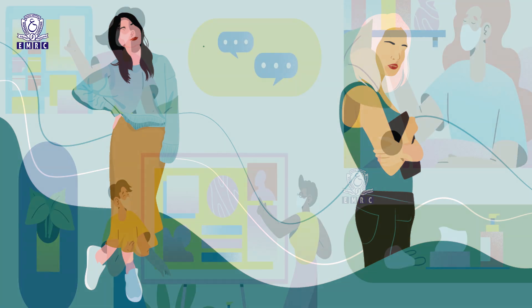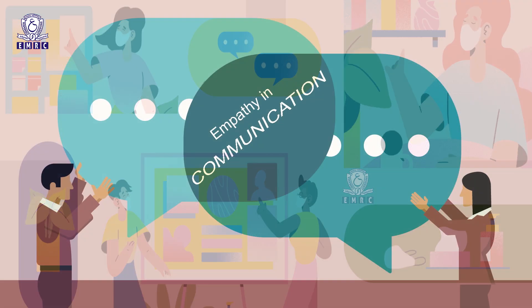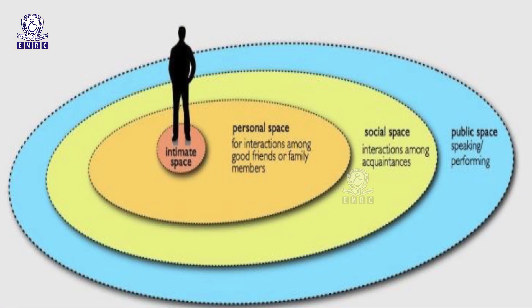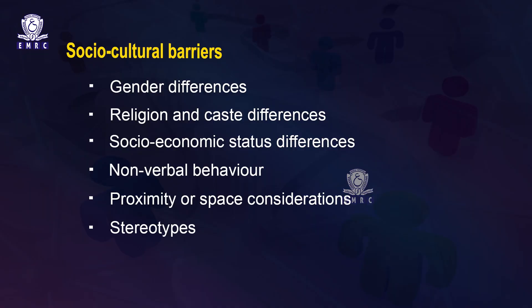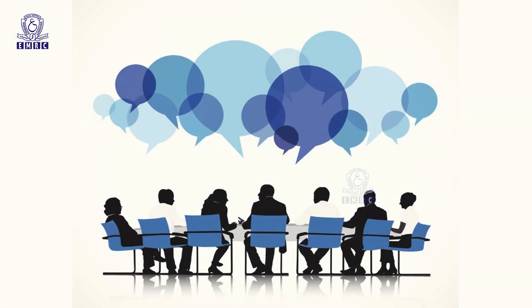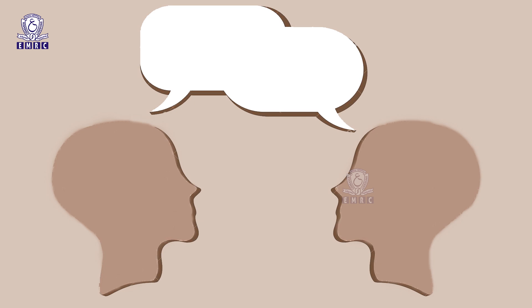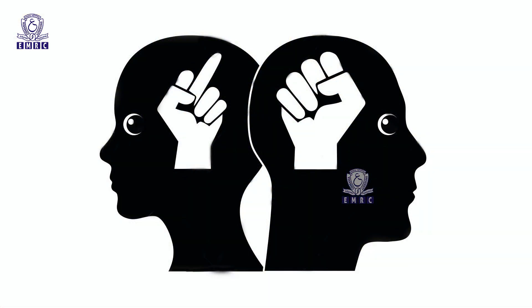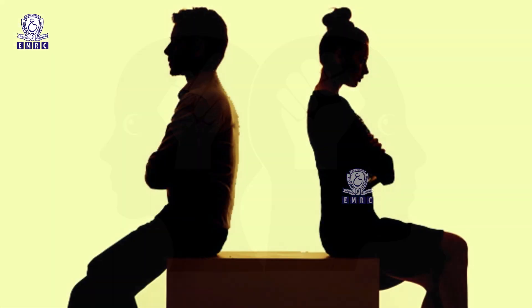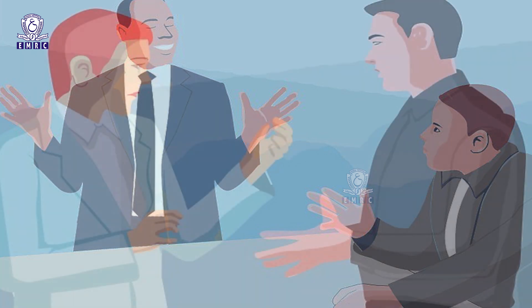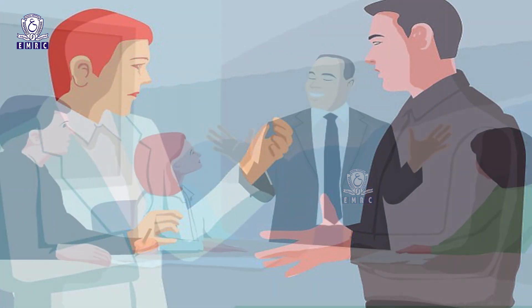Proximity or space considerations differ with every culture when engaging in face-to-face communication, and proximity may become a barrier if not paid attention to. Stereotypes are rigid, over-generalised mental ideas about an entire group of individuals or about their behaviours as a whole. For example, 'all men are aggressive' is a stereotype where aggressive behaviour is attributed to all men irrespective of other factors. Stereotypes act as a barrier to communication because people operate from preconceived notions without attending to the complete message.